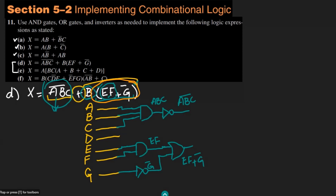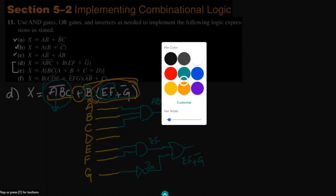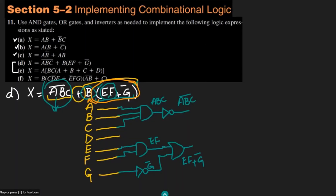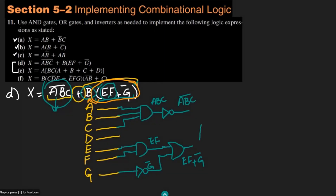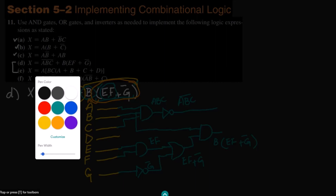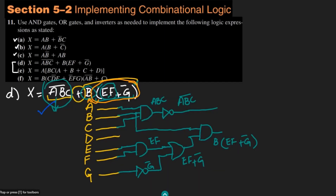Now with this e·f plus g complement, I have to multiply by b. So I use a two-input AND gate: one input is the e·f plus g complement output, and the other input is b. What I will get here is b·(e·f plus g complement). Now I have two separate parts: the first part is a·b·c whole complement, and the second part is b·(e·f plus g complement). These are combined together by an OR gate.